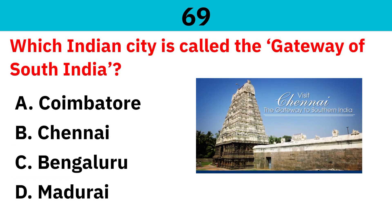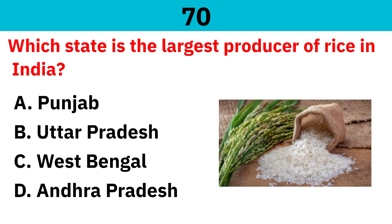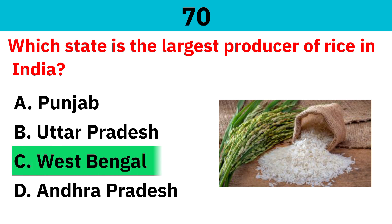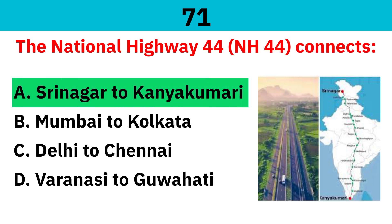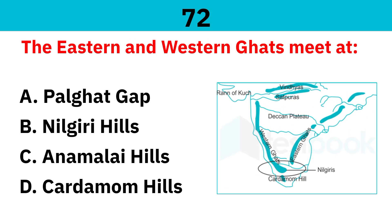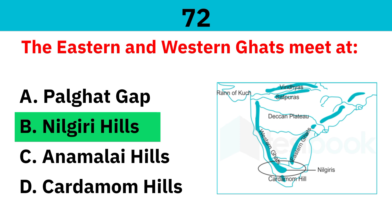Which Indian city is called the Gateway of South India? Correct answer is Chennai. Which state is the largest producer of rice in India? Correct answer is West Bengal. National Highway 44 connects Srinagar to Kanyakumari. The Eastern and Western Ghats meet at the Nilgiri Hills.